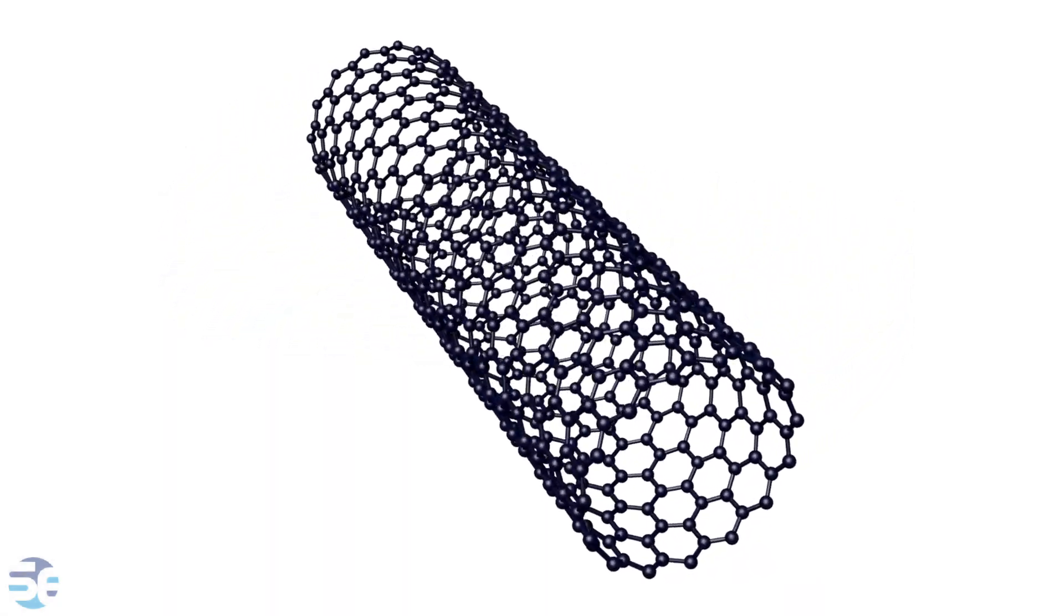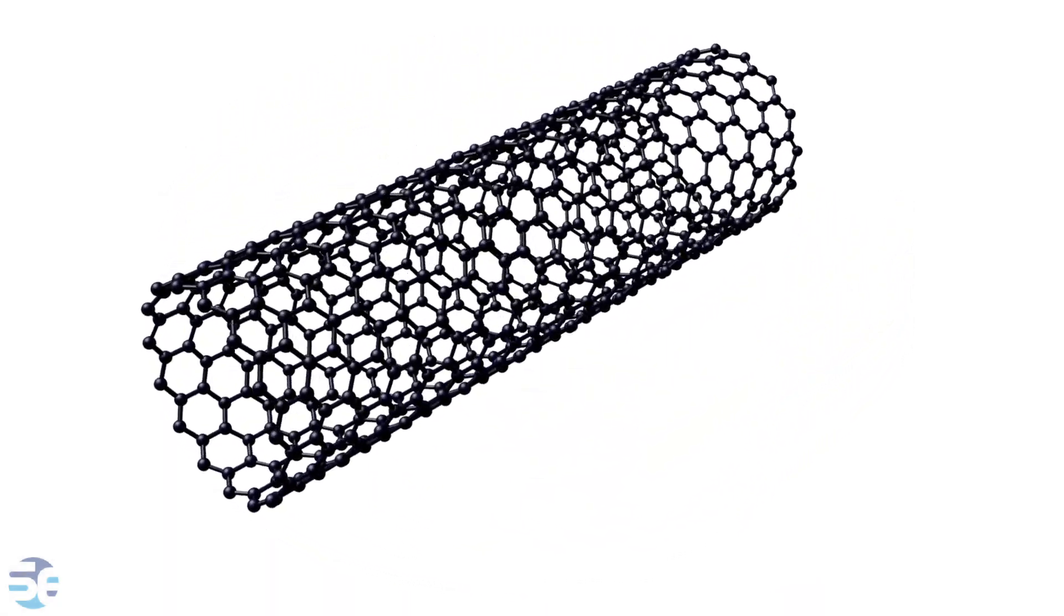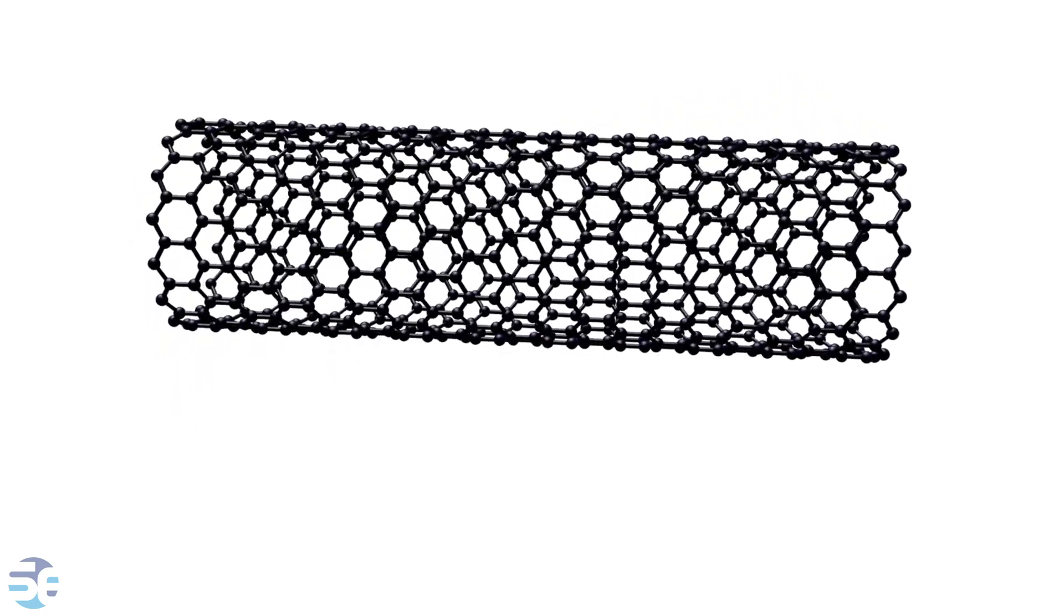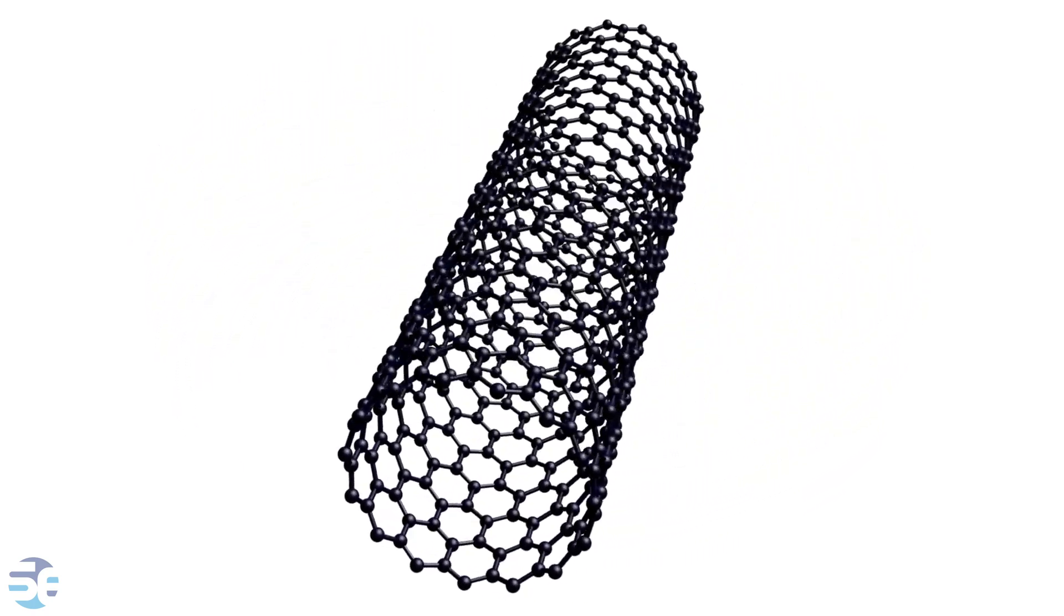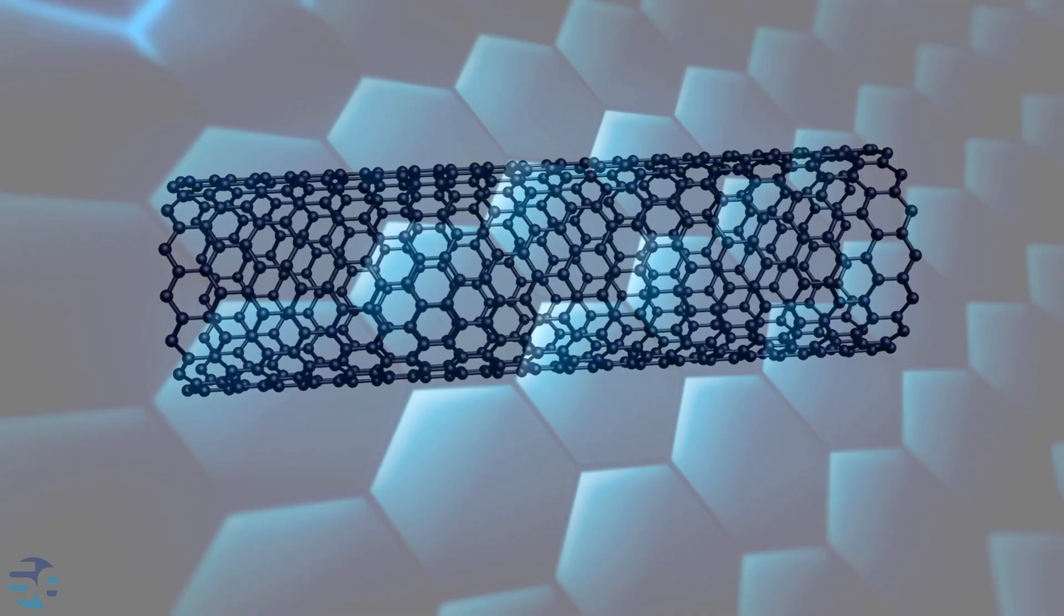At their core, carbon nanotubes are composed of carbon atoms arranged in a hexagonal lattice, forming a seamless cylindrical structure. This unique arrangement gives rise to remarkable mechanical, electrical, and thermal properties.